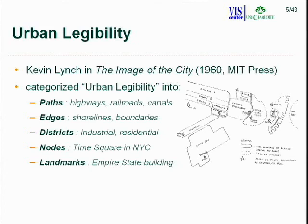The remaining categories are districts — such as industrial or residential areas — nodes, which are areas where lots of activities converge, like Times Square in New York City, and landmarks. Landmarks can be anything: a tree, a post sign, a big building — whatever people use to navigate in an urban environment.